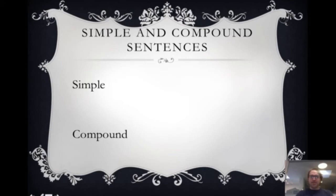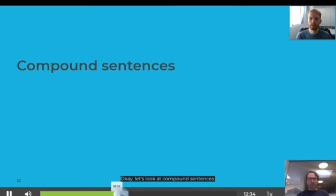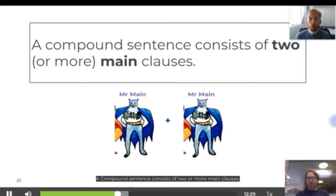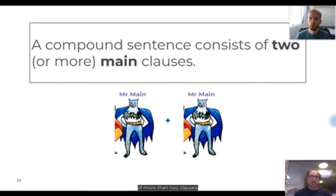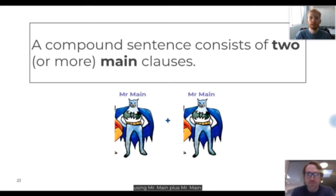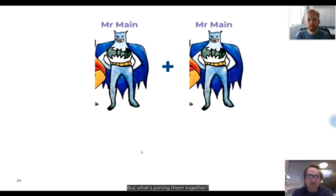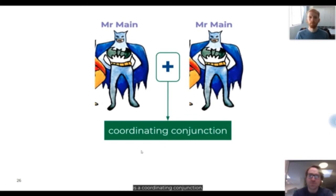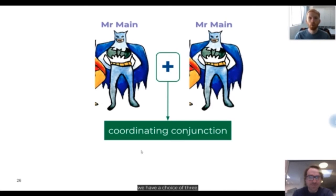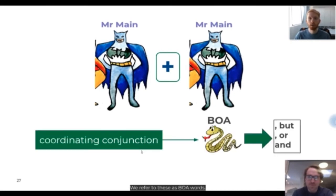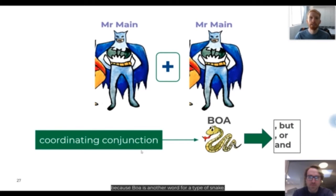Now let's look at compound sentences. A compound sentence consists of two or more main clauses. Normally they're made up of two main clauses — Mr. Main plus Mr. Main. What's joining them together is a coordinating conjunction. We have a choice of three, which we refer to as BOA words — B, O and A — standing for BUT, OR and AND. BUT and OR are preceded by a comma; AND is not.